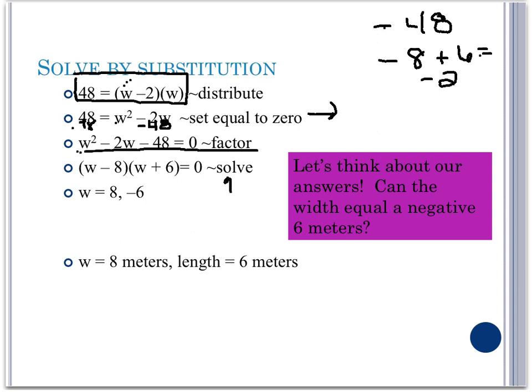Now we can use our zero product principle, which states that if two factors being multiplied together equal to 0, then one of our factors must be 0. Therefore, w minus 8 would have to be equal to 0, which gives us w is equal to 8. Or w plus 6 is equal to 0, which gives us w is equal to a negative 6.